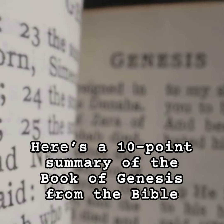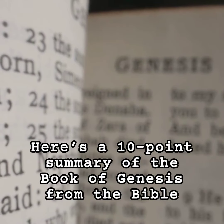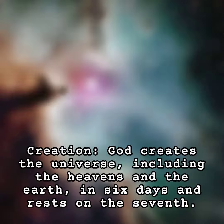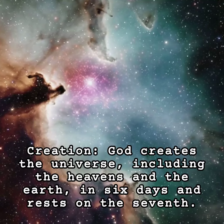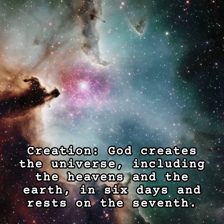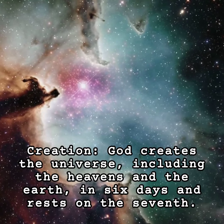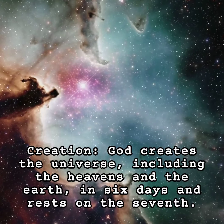Here's a 10-point summary of the book of Genesis from the Bible. Creation: God creates the universe, including the heavens and the earth, in six days and rests on the seventh.